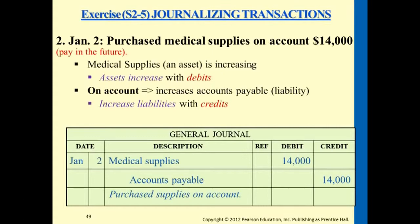So we have the medical supplies account affected and accounts payable affected. Medical supplies is an asset account; accounts payable is a liability account. The asset account increases on the debit side. The liability increases on the credit side. Description: purchase supplies on account — this explains the business activity.